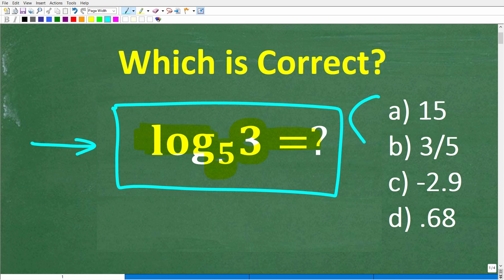Well, this is a multiple choice question. And our answers are A, 15, B, 3 fifths, C, negative 2.9, and D, 0.68.